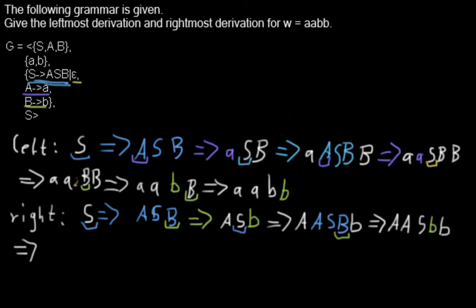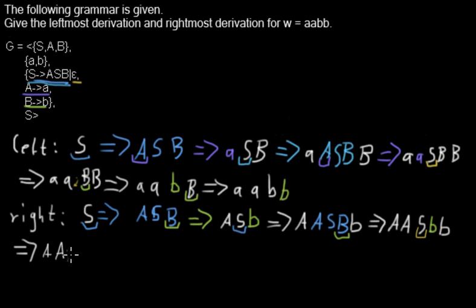Now I will replace the S by applying the other rule — replace S by epsilon. Because if I used the other rule the word would become too long; I'm just showing you the successful derivation for this string. So I keep the a and a that were left from before, nothing is added because I replace the S by the empty string, and I just keep the two b's that were left from before.